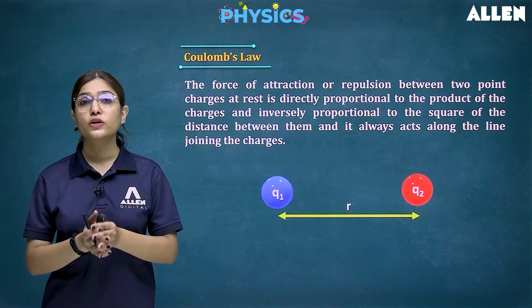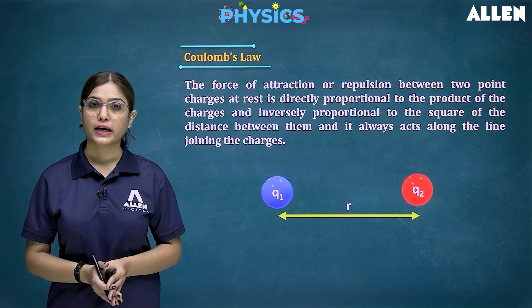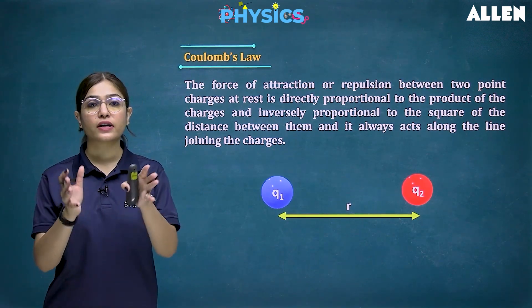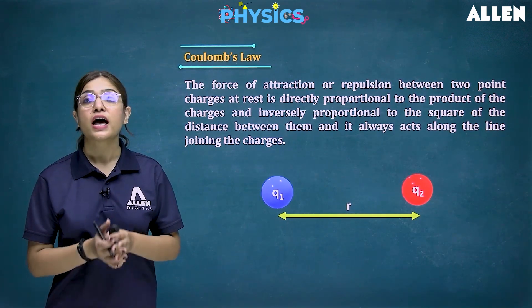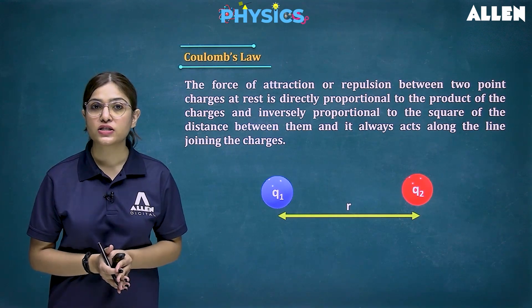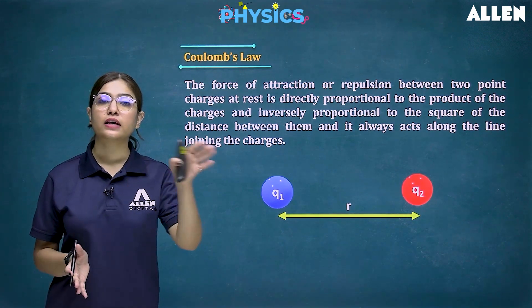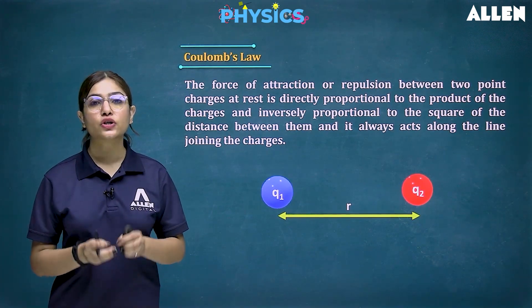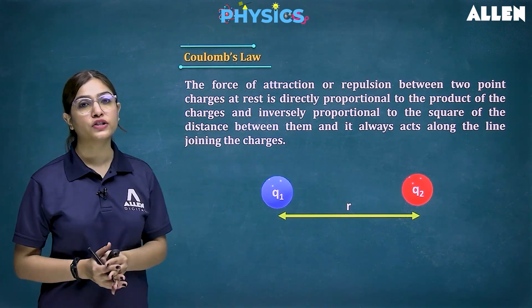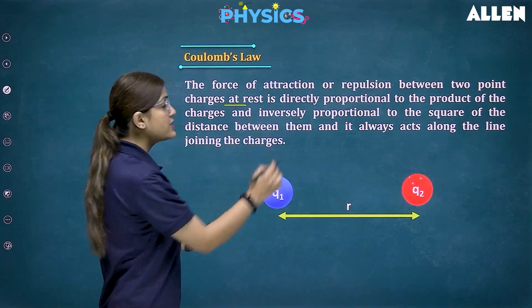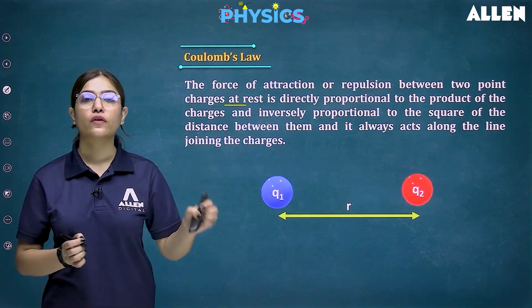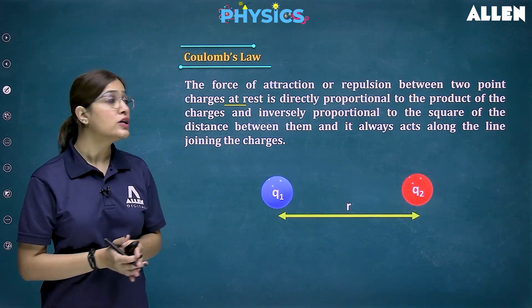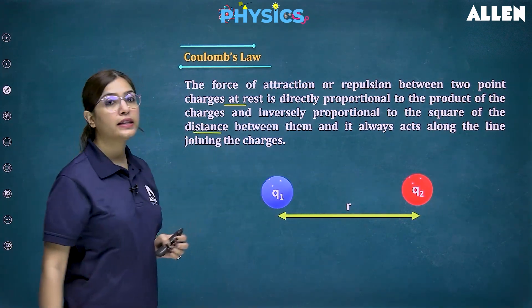There are two kinds of charges: positive and negative. If you bring two like charges together, they show repulsion force. If you bring two unlike charges together — one positive and one negative — we see attraction force. So the force of attraction or repulsion between two point charges at rest is directly proportional to the product of these charges, and inversely proportional to the square of the distance between them.